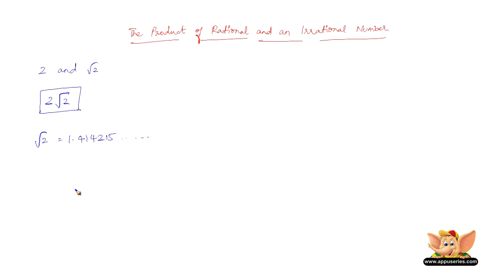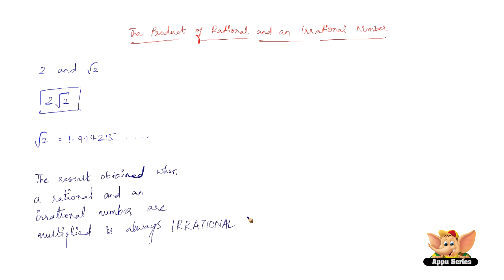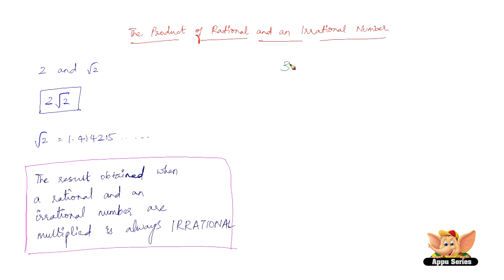The conclusion is: the result obtained when a rational and an irrational number are multiplied is always irrational. Let's see another example — find the product of 3 and root 5. The answer is 3 root 5, and it is irrational.